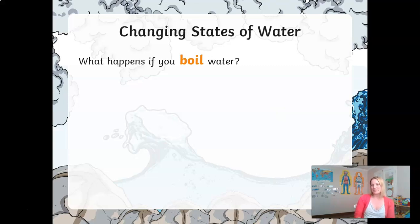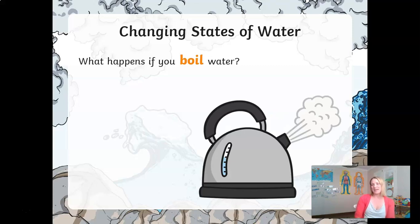What happens if you were to boil that liquid water now — put it in the kettle? Other than making a nice cup of tea, you would see evaporation occurring. When you boil water, the liquid turns into a gas very rapidly through heating and you see water vapor. Water boils at 100 degrees Celsius, but not all liquids boil at the same temperature.